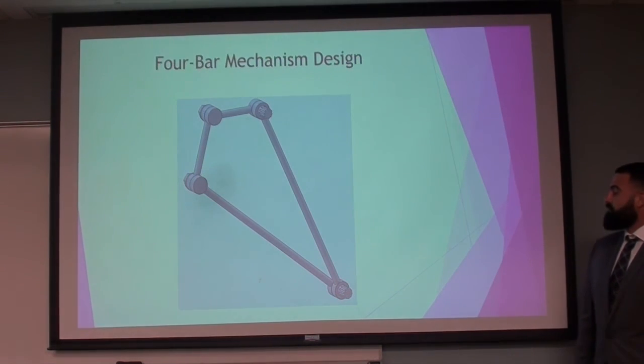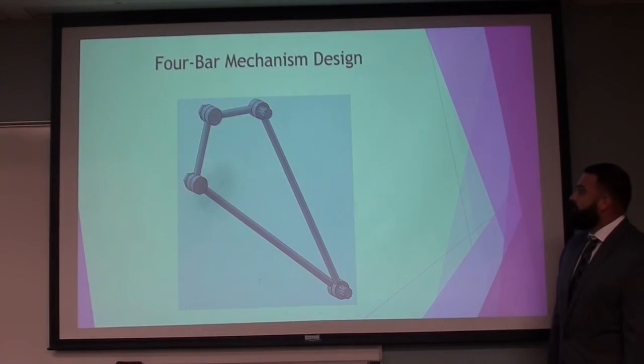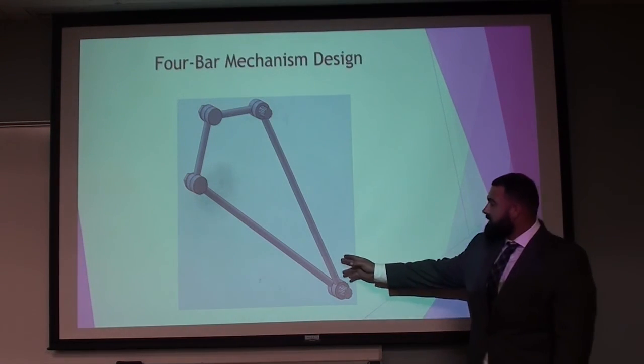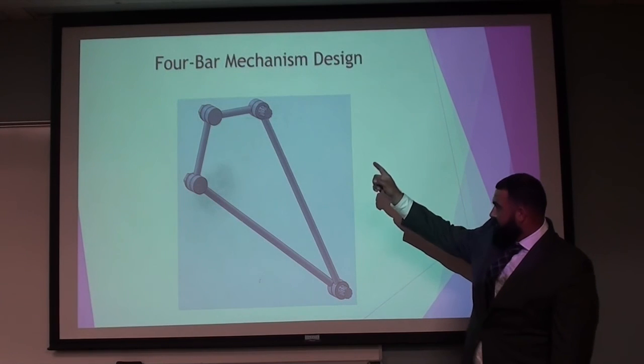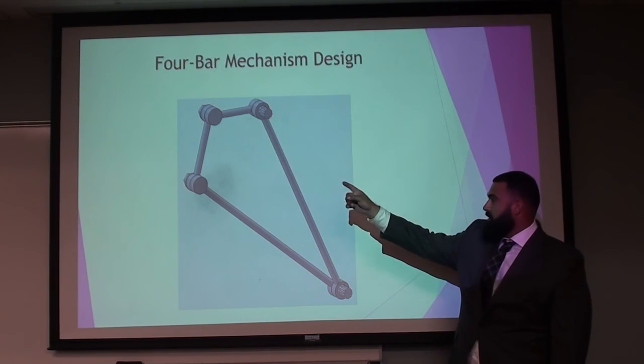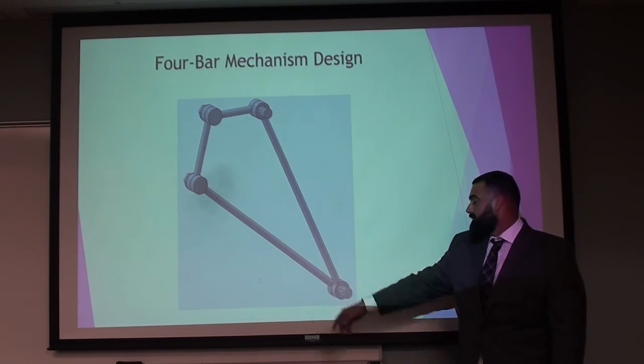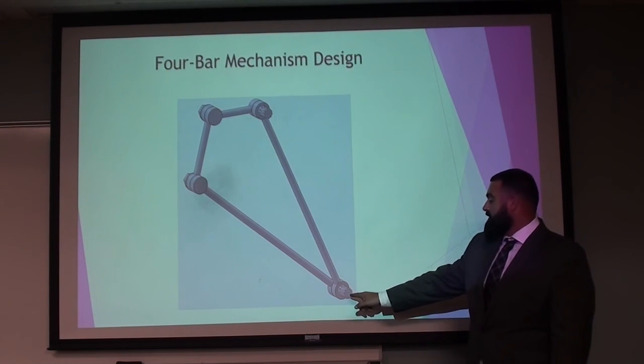This is a picture of our 4 bar mechanism. This being the fixed link right here. The crank is the shortest link up there. That's the coupler link, and this is going to be our rocker. There's spline drives on each end.